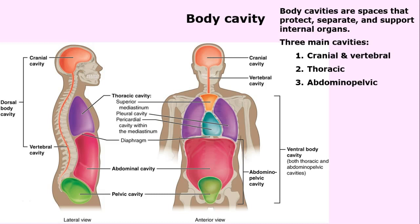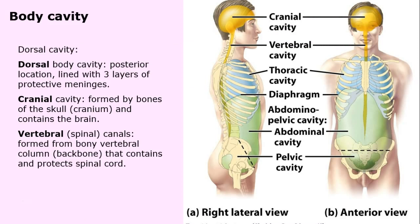Three main cavities, and I'll go through these slowly. Cranial and vertebral, which is on the far left — you can see brain and spinal cord. Thoracic, which is the chest region, and the abdominal pelvic. I'll be going through each one slowly. We'll start with the dorsal cavity — that is the cranial and the vertebral column.